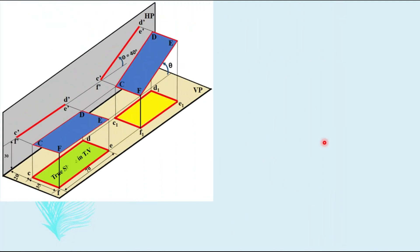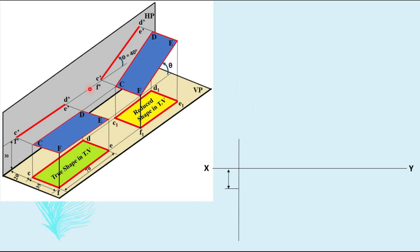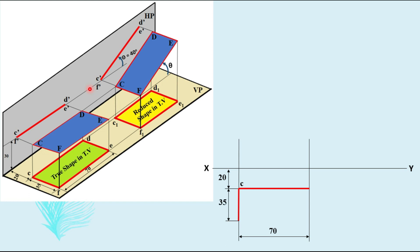Now let us draw the actual 2D solution. First, draw the XY line. Taking the projector distance — C is 20 mm in front of VP — locate C, then take length 70 mm and breadth 35 mm to complete the rectangle and name its corners. Then take the front view distance: CF is 30 mm above HP, so place it 30 mm above the XY line and complete the front view, naming the corresponding points C', F' on one line and D', E' on the other.